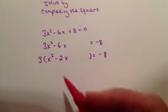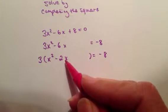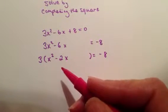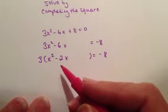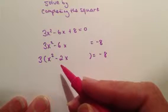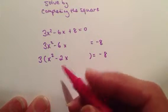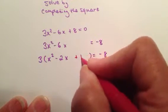Just like before, I'm going to take half of this b term, the coefficient in front of the x term. I'm going to take half of it and square it. So half of negative 2 is negative 1. Negative 1 squared is 1. So I'm going to add a 1 right here.